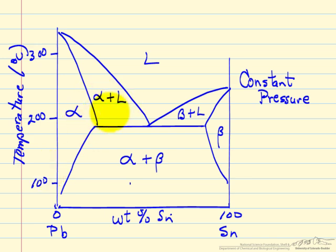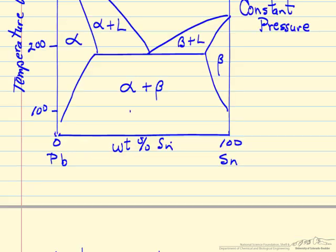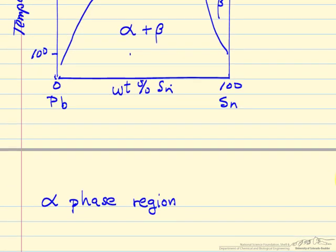This is a region where alpha and the liquid phase are in equilibrium, so we have two phases. Any point in here really corresponds to so much of the solid phase and so much of the liquid. Exactly the same now for this region, except the liquid is in equilibrium with a high tin content solid. In this region we have two solids, so much of the alpha phase and so much of the beta phase.